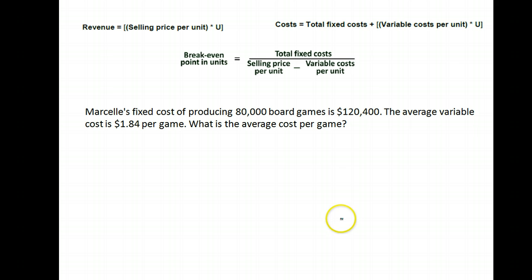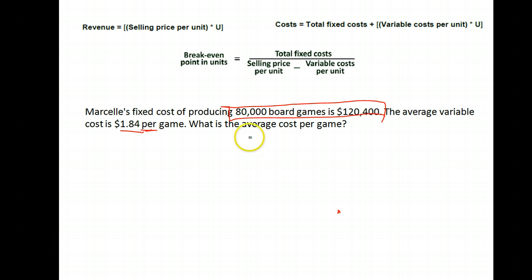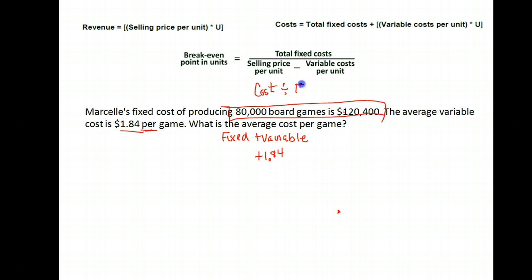Marcel's fixed cost for producing eighty thousand board games is one hundred and twenty thousand four hundred dollars. The average variable cost per game is one dollar and eighty-four cents. What's the average cost per game? We need to take our fixed cost and add the variable cost, and it needs to be per game. The variable cost per game is one dollar eighty-four, but we don't know the fixed cost per game — we need to divide the total cost by the number of games.